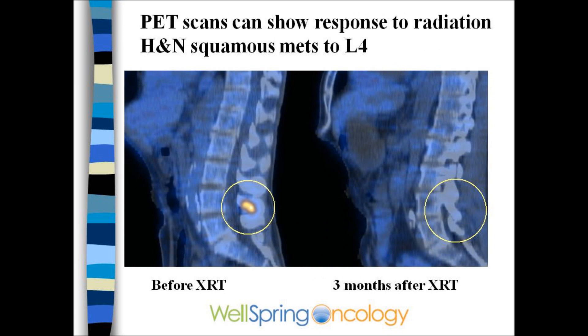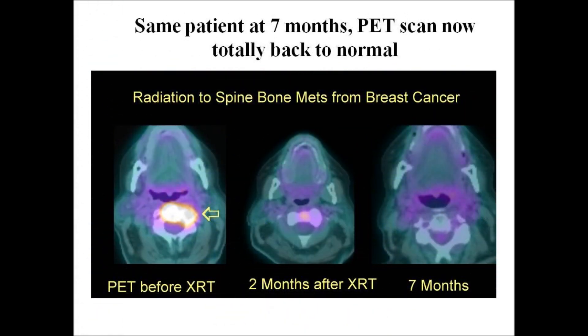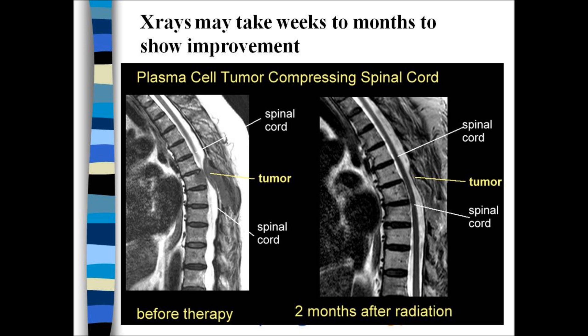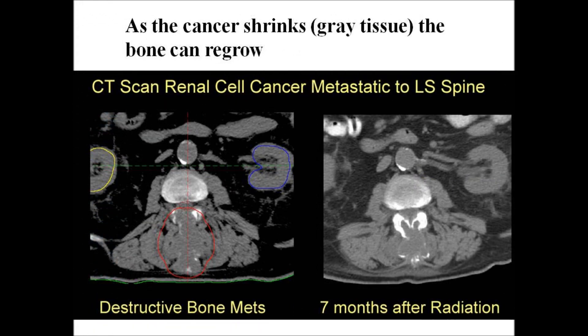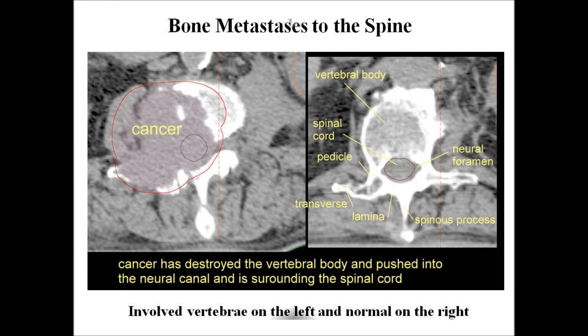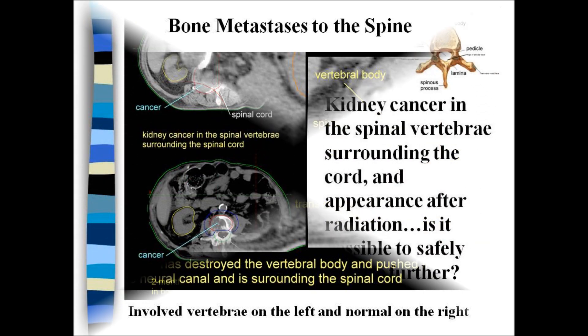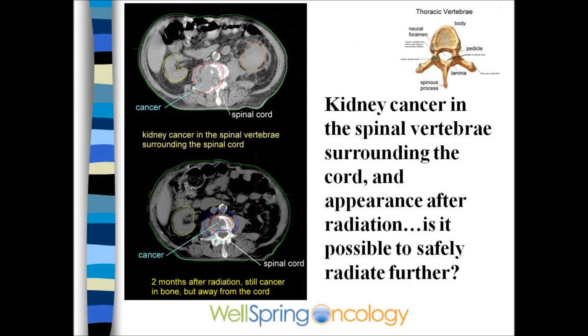Not only do the symptoms go away, but the cancer is often destroyed — x-rays will look better, the hot spot on the PET scan will slowly get colder, and bone mass pinching on the nerves will shrink away. The destroyed bone can actually regrow itself. Here we see destroyed bone growing back after seven months with more white bone visible. Here we see a large hole in the vertebrae obscuring the spinal cord, and two months after radiation, enough bone grew back to see most of the vertebral anatomy.